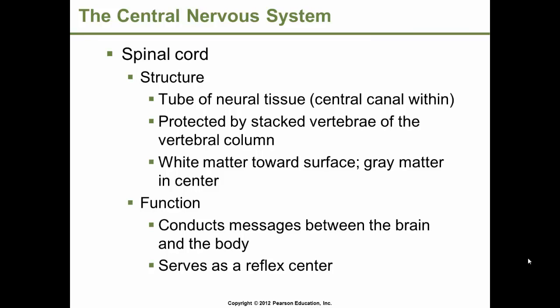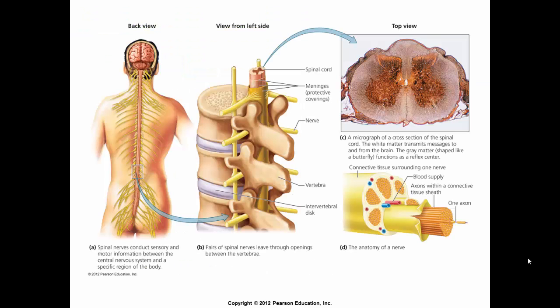The gray matter of the spinal cord is located in the interior region and houses interneurons — those association neurons — and cell bodies of motor neurons involved in reflexes. Its function is to conduct messages between the brain and the body, and it serves as a reflex center. Spinal nerves conduct sensory and motor information between the central nervous system and specific regions of the body through openings between the vertebrae.